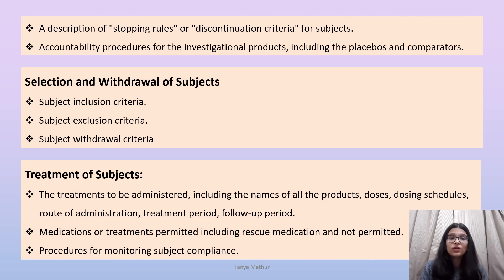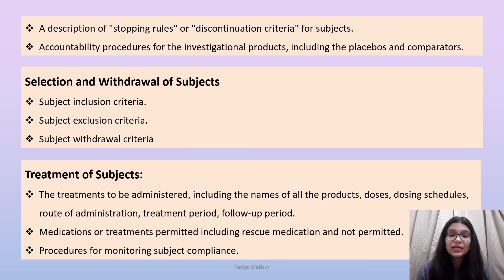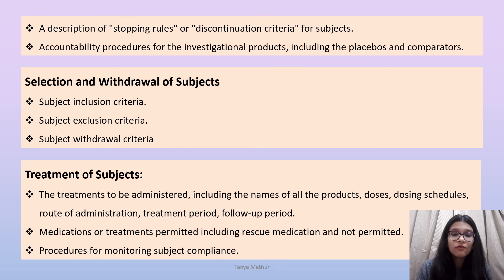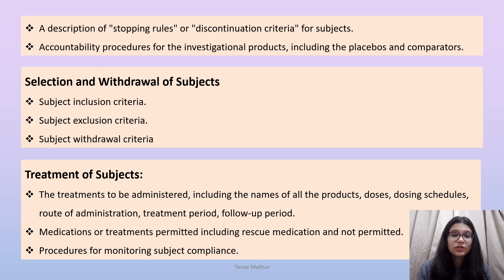The selection and withdrawal of subjects section addresses instances where certain individuals cannot be included due to age limits or gender. This involves subject inclusion criteria, subject exclusion criteria, and subject withdrawal criteria. For treatment of subjects, the protocol covers treatments to be administered including names of all products, doses, dosing schedules, route of administration, treatment period, and follow-up period. It also covers medications or treatments permitted including rescue medication, medications not permitted before, during, or after the clinical trial, and procedures for monitoring subject compliance.